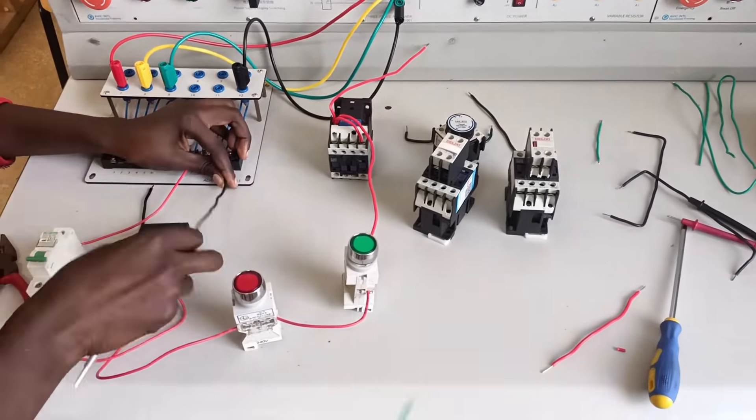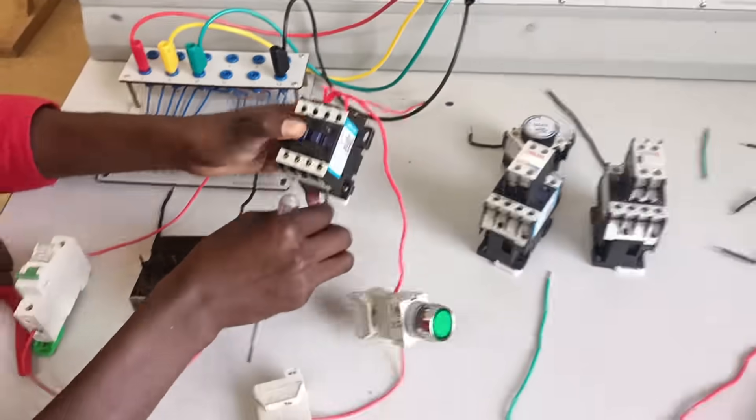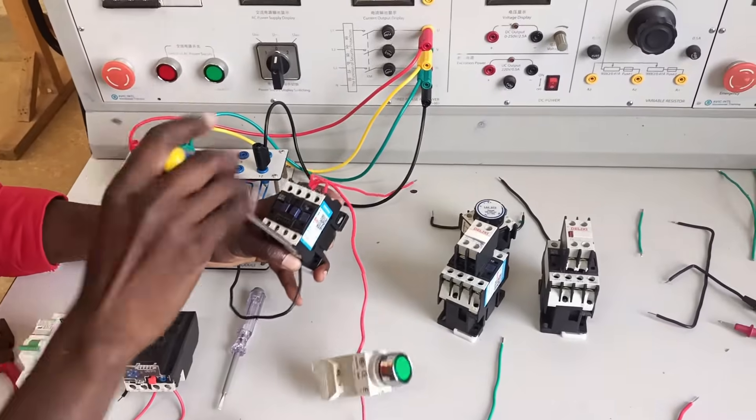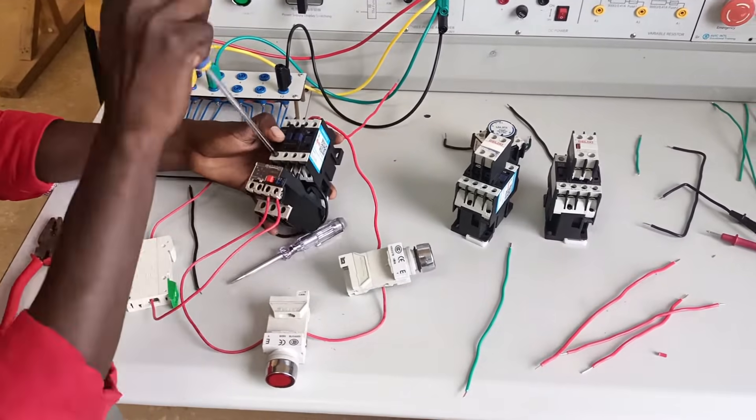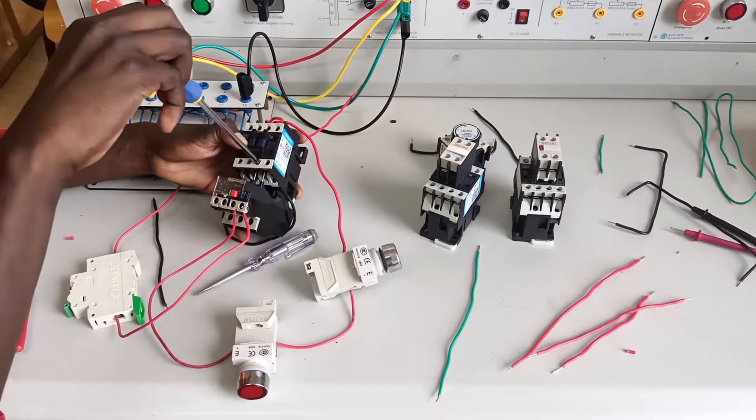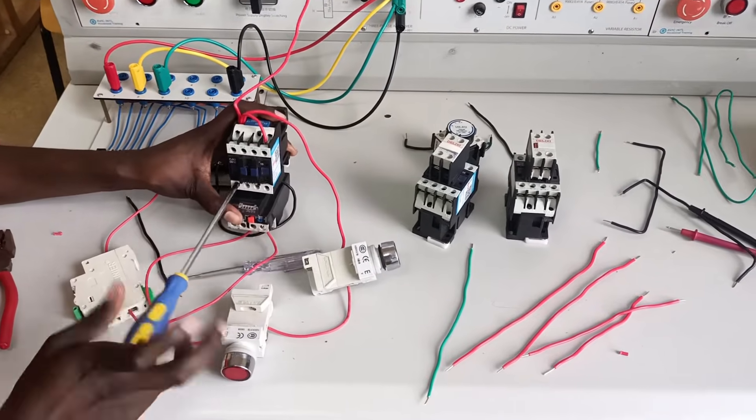Now let's terminate the A2, that's the neutral, to the A2 of the main contactor. In that case the energizing coils are complete. My thermal overload relay interlocks with the contactor, that's why it's so easy to do. But for your case if you need cables to do that, kindly do so.